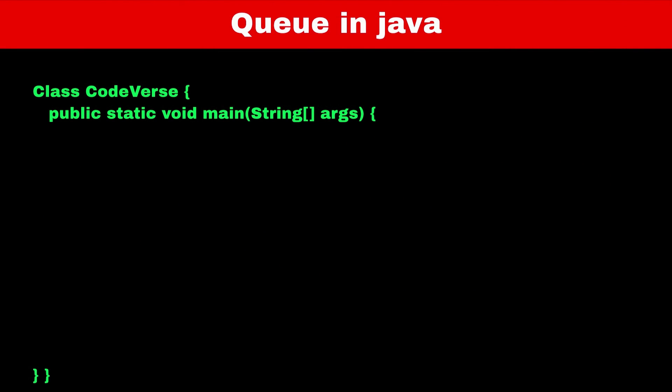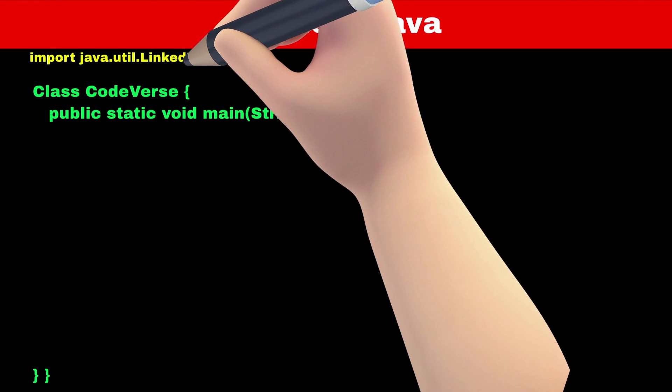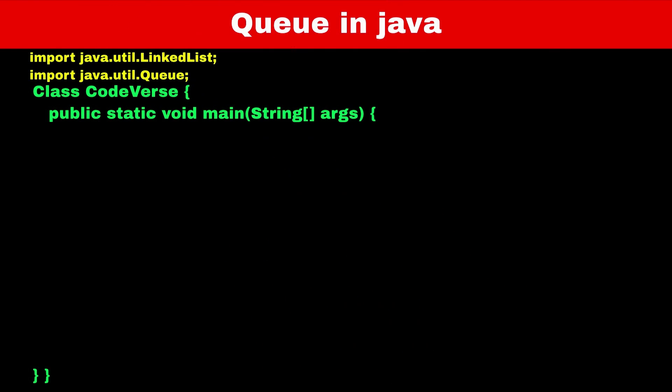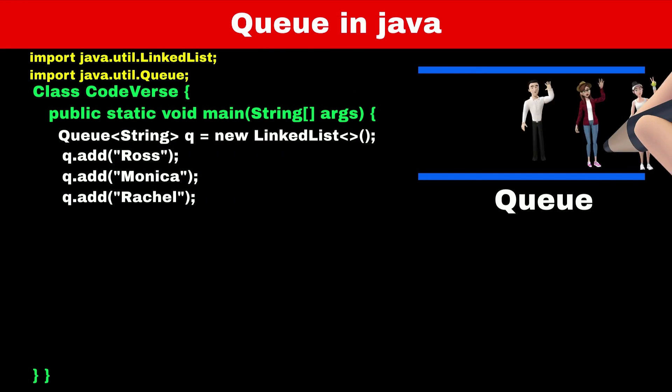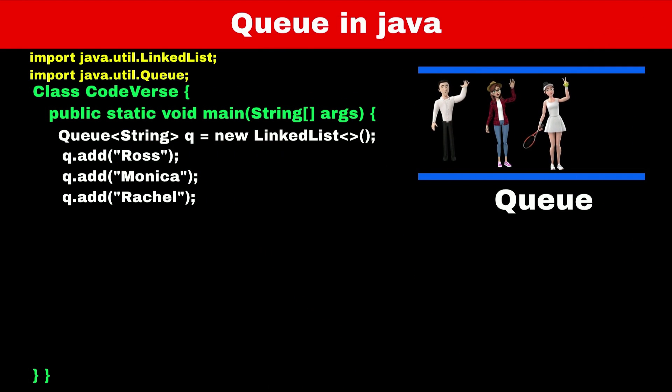Now let's see how we can use the built-in queue interface in Java. The queue interface is in the java.util package, so we have to import it first. Since queue is an interface, we need to implement it. There are three ways: linked list implementation, array dequeue implementation, and priority queue. While defining the queue, we can select which implementation we want. In today's video we will use linked list implementation. To define a queue, create an object of the queue class with the data type in angle brackets, then use the LinkedList constructor. Now the queue is ready. We will add Ross, Monica, and Rachel into the queue using the add function.